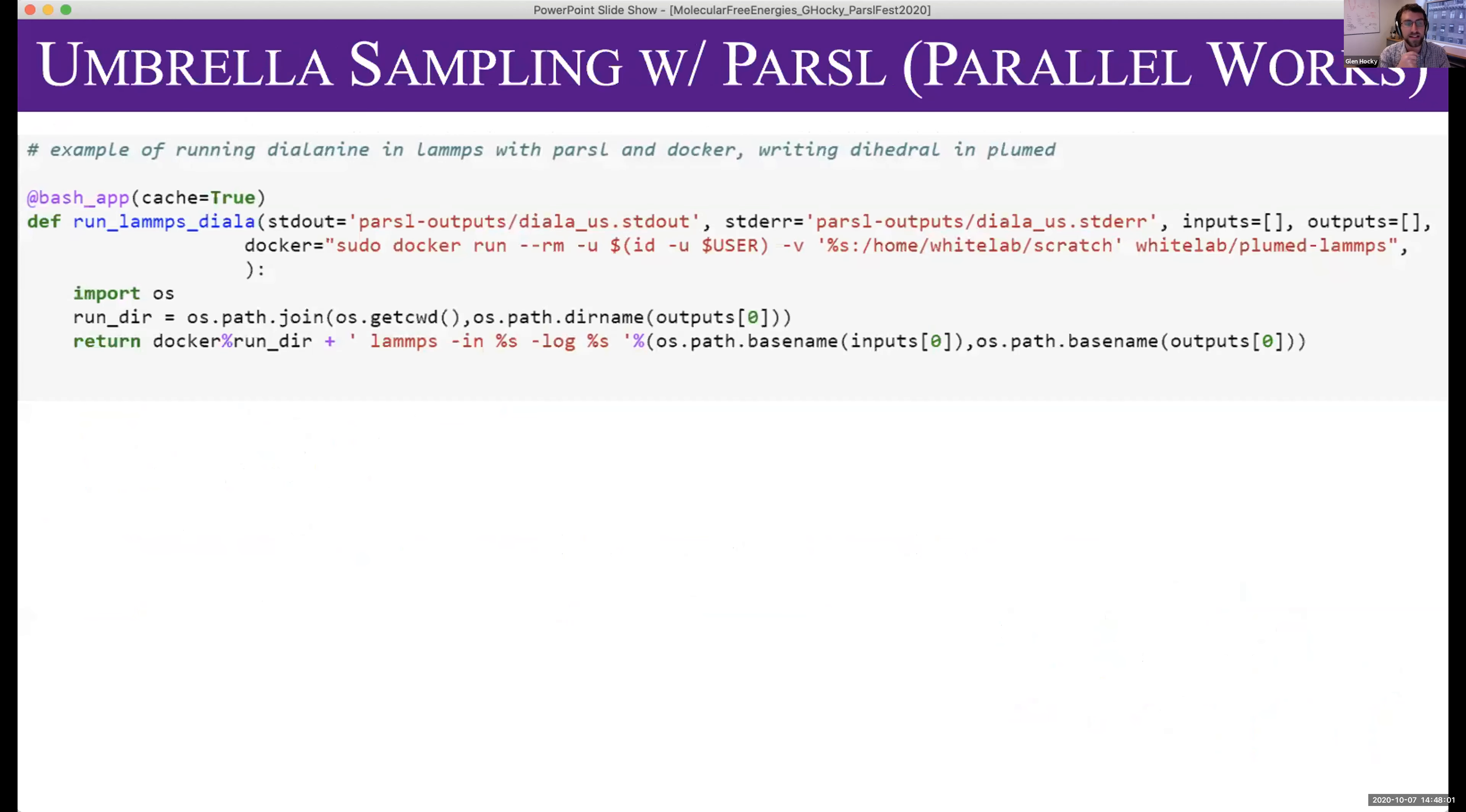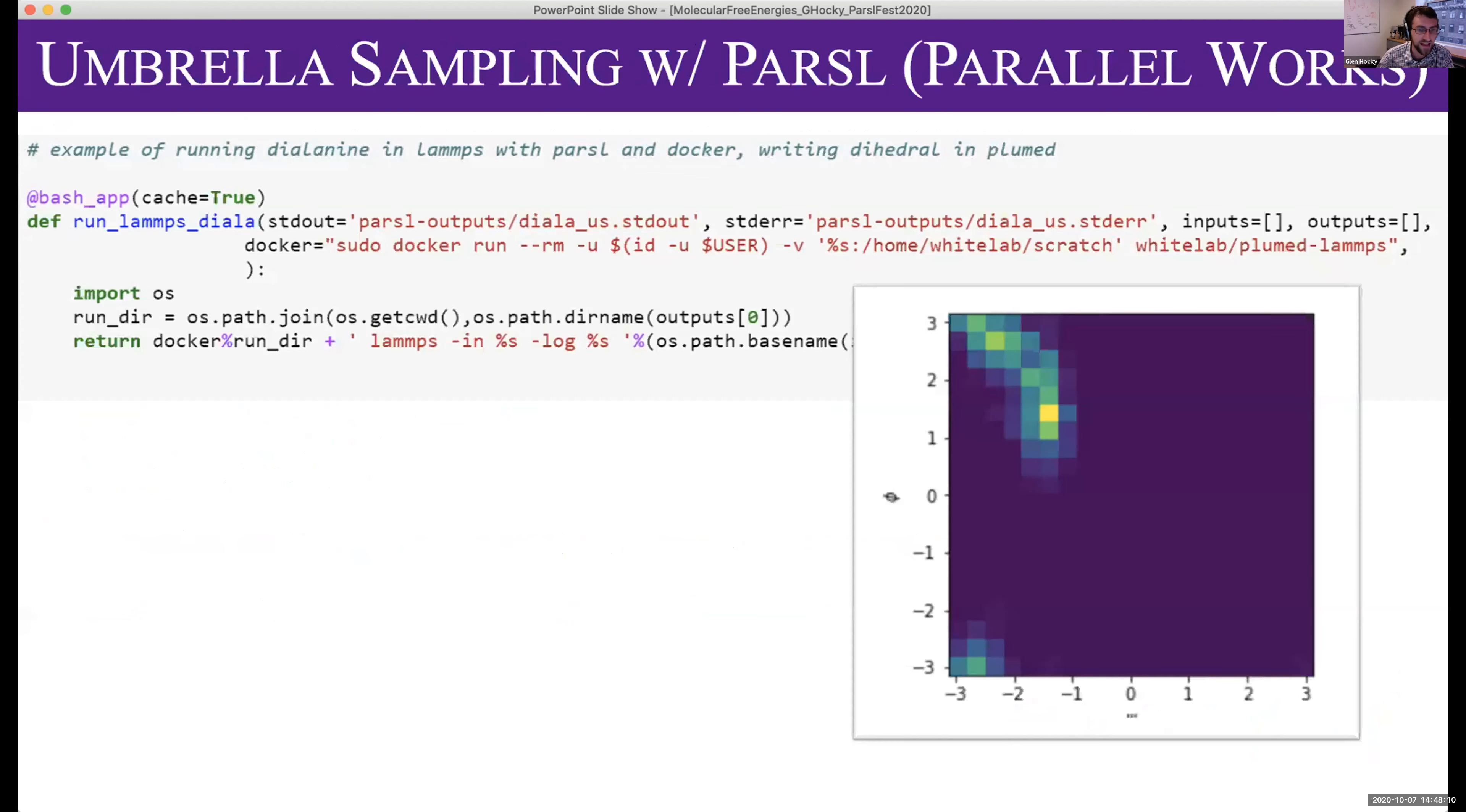We're going to be doing umbrella sampling, which I did with Parallel Works last year. That's a way of calculating the free energies of this molecule. We made a bash app which uses a Docker container of LAMPS with Plumed. If you just run a simulation, the molecule will stay in these low energy spots. The point of these fancier methods is to observe the free energy in this whole map.